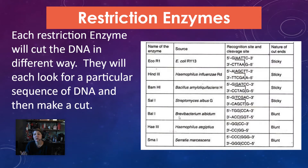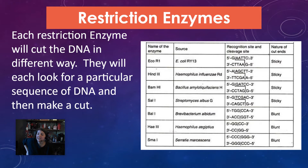There are lots of different restriction enzymes and each one has its own sequence that it identifies and then uses to cut the DNA. For instance, EcoR1 is a restriction enzyme that looks for the sequence GAATTC and when it finds it, it cuts the DNA at that particular spot. BAL1 looks for TGGCCA and cuts the DNA at that spot. So again, each restriction enzyme has its own sequence that it's looking for.